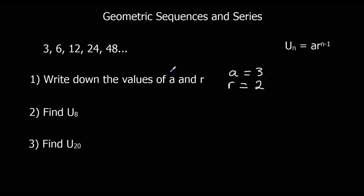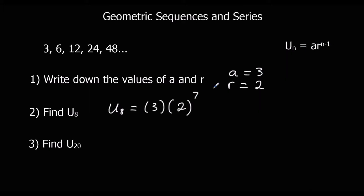Now the question says find u8, the eighth term. So we're going to use the nth term rule. u8 is a, which is 3, multiplied by r, which is 2, to the power of n minus 1. For the eighth term, n minus 1 is 8 minus 1, which is 7. So we type 3 times 2 to the power of 7 into the calculator, and that gives us 384.